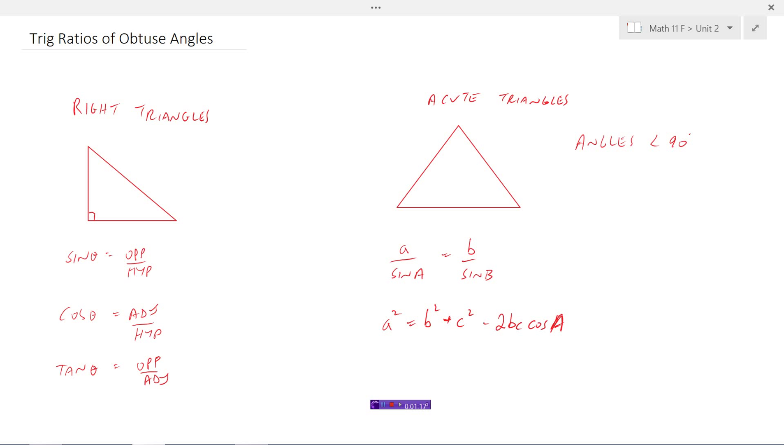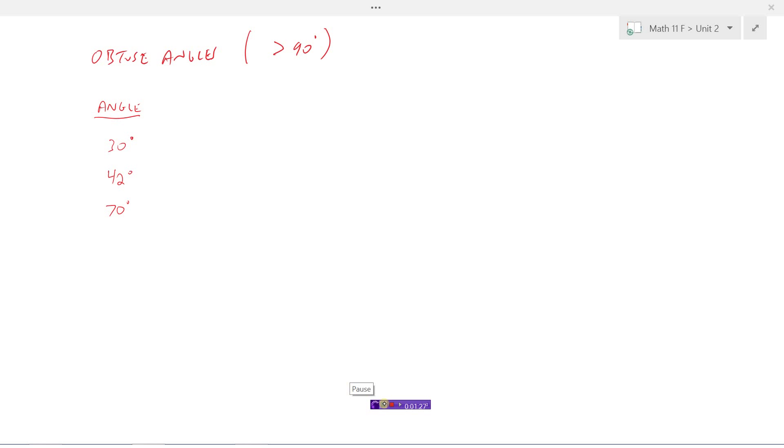The question now is what happens if our triangle has an angle that is more than 90 degrees. Those are what we call obtuse angles. We're going to eventually look at obtuse angles, angles that are more than 90 degrees. But it turns out that there's a relationship between angles that are more than 90 degrees and angles that are less than 90 degrees. Let's check these angles out here. These are acute angles because they're smaller than 90 degrees.